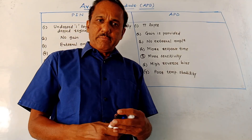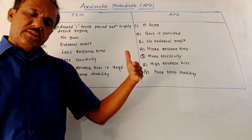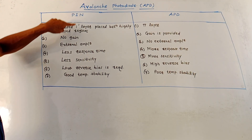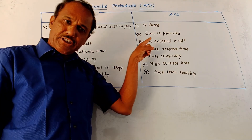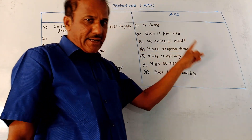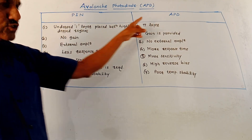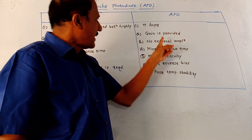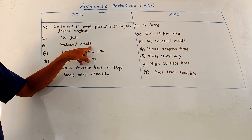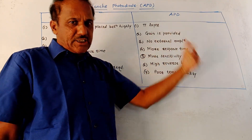Now let us discuss the comparison between PIN photodiode and APD, that is avalanche photodiode. You may use these points to write the advantages and disadvantages of each diode as well. In case of PIN photodiode, the undoped I layer is placed between two highly doped regions, whereas in case of APD, instead of the I layer, a pi layer is placed between the heavily doped regions. In PIN photodiode there is no gain, whereas in APD, due to the avalanche phenomenon or impact ionization process, gain is provided. Since there is no gain in PIN, external amplifiers are required to amplify the output, whereas for APD it is not necessary to connect any external amplifier because the gain itself is provided by the device.